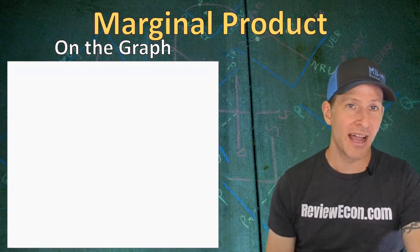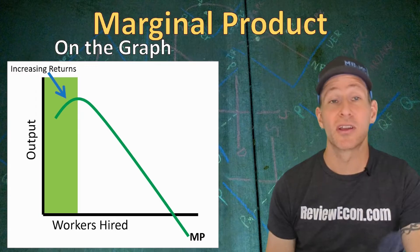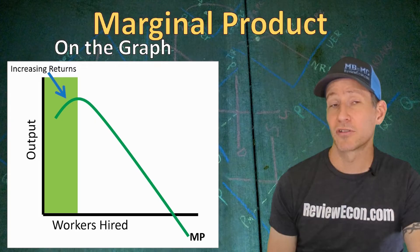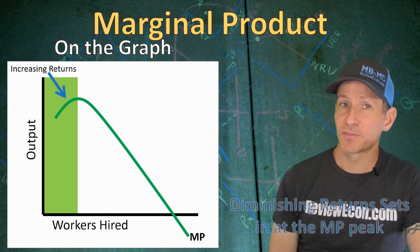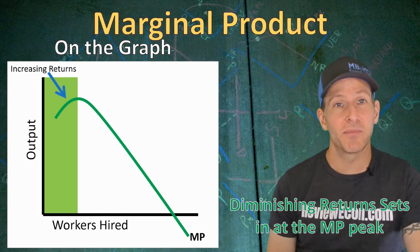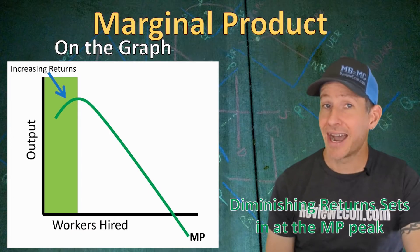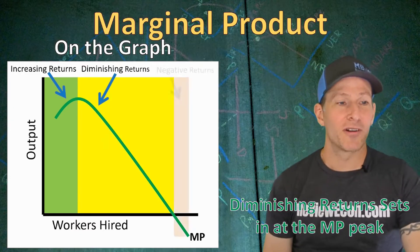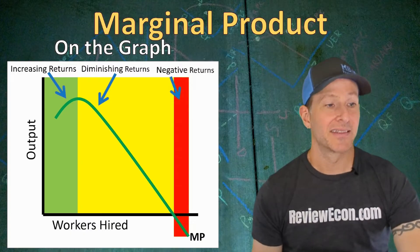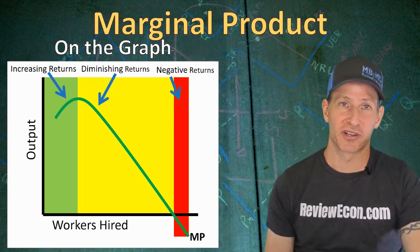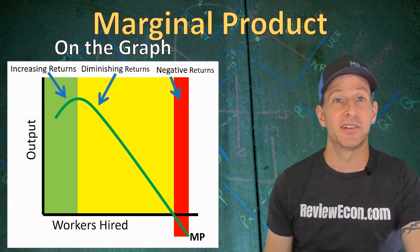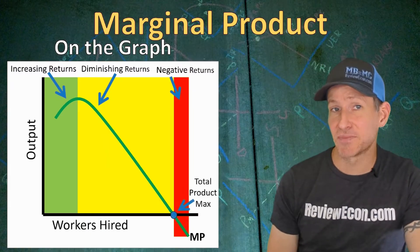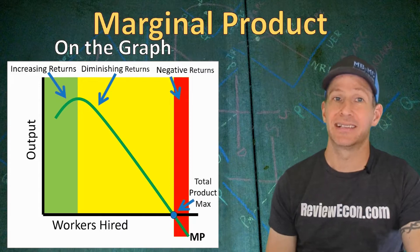When we put it on the graph, at low quantities of workers the marginal product will be upward sloping — that's increasing returns because marginal product is rising. When marginal product is at its peak, diminishing marginal returns sets in and hiring more workers will cause marginal product to fall. When marginal product crosses the x-axis, that's where we have negative marginal returns. Total product is at its maximum where marginal product is zero.